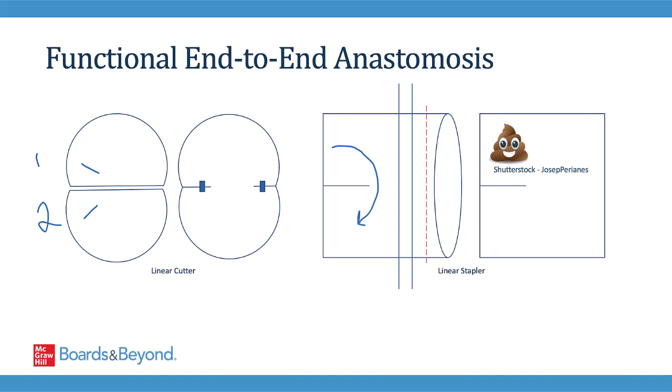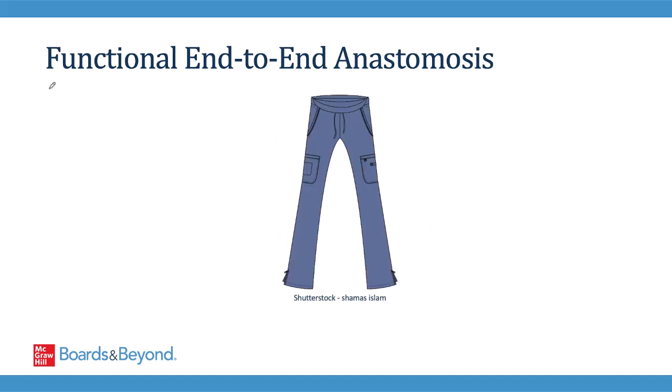At the end of the day, you have a pathway for intestinal contents to flow around the point of connection. Another way to think about this is to consider a pair of scrub pants. After the linear cutter is used to fire two rows of staples and cut in between, the connection looks like the inside of scrub pants for things to move from one pant leg to the other. The final step is the linear stapler being used to seal off the waistband, and after those two rows of staples are fired, you can use the scalpel to cut the excess tissue off.